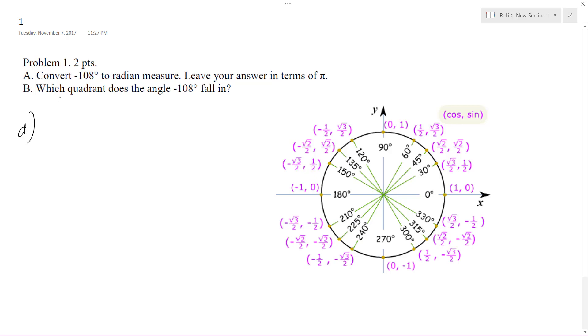So part A, the conversion from negative 108 degrees. I'm just going to leave the negative coefficient there. And then to convert, it's going to be pi divided by 180.